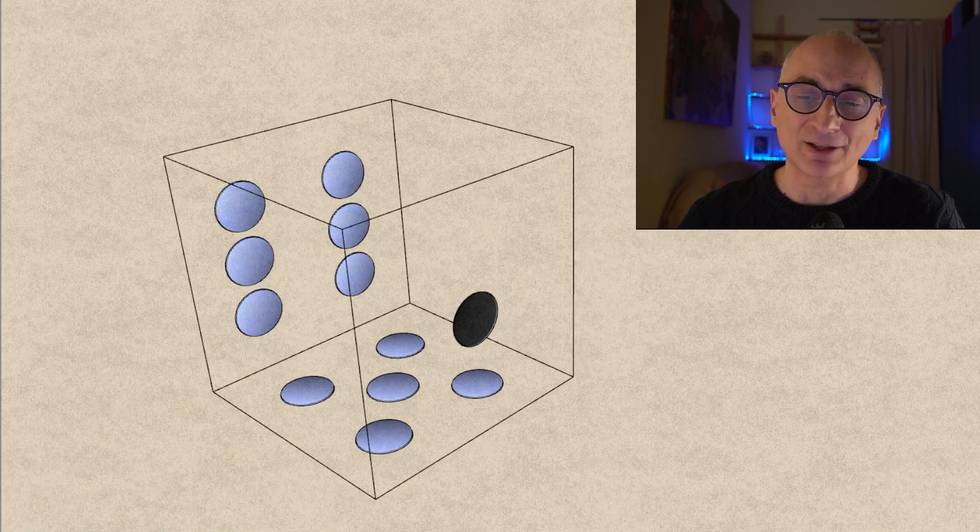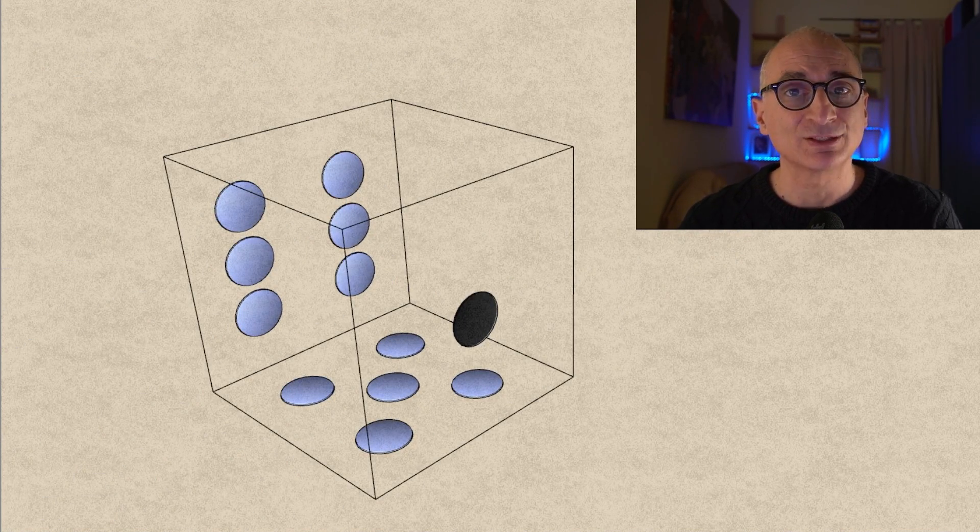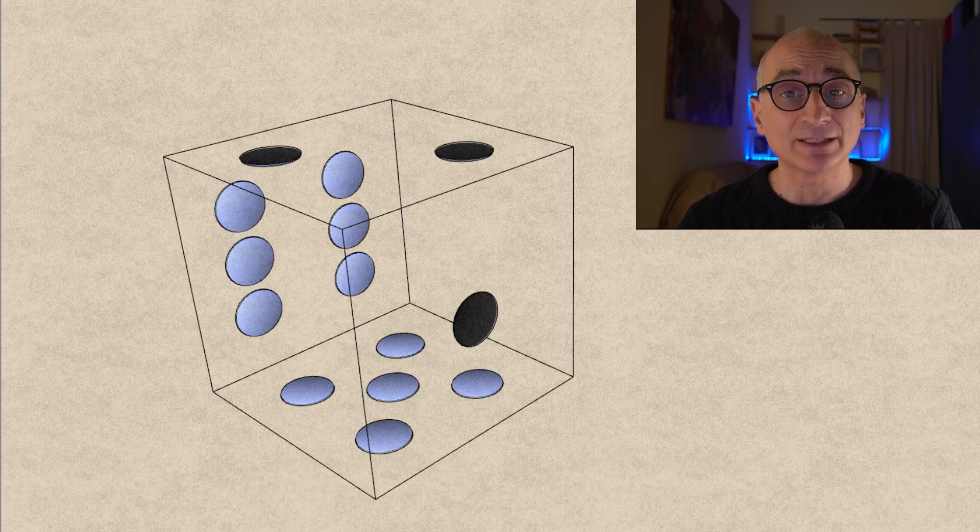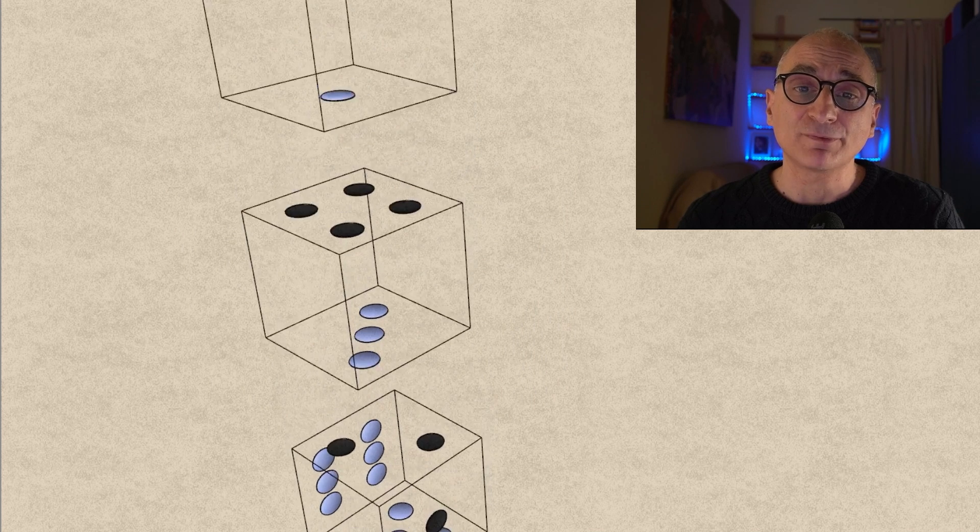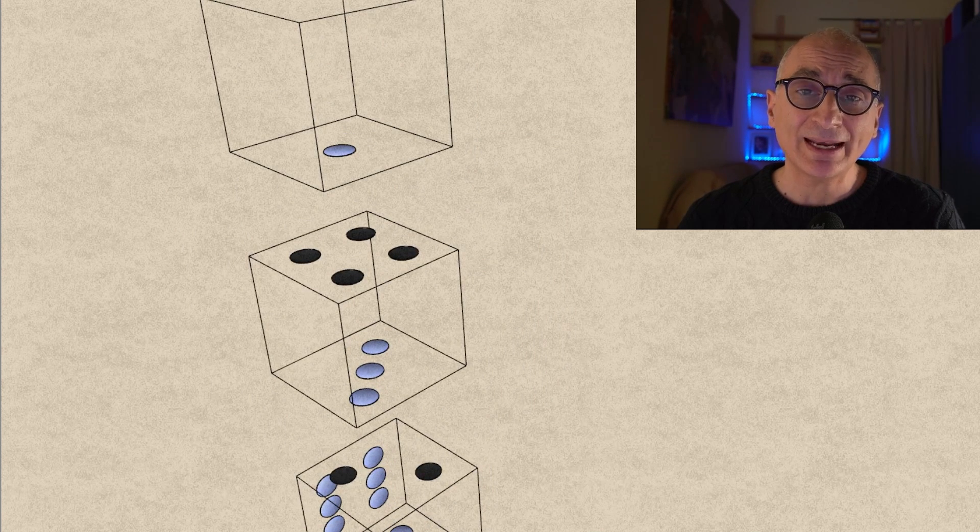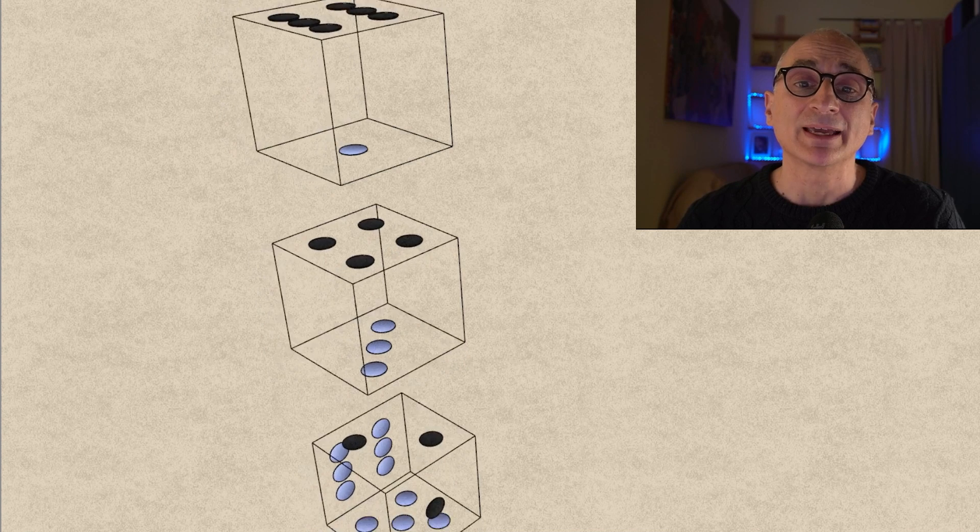So let's finally assume that on the bottom face there's a five. So on the opposite face there will be a two, on the next dice there will be a three, on the opposite face there will be a four, on the touching face there will be a one, and on the opposite face there will be a six.